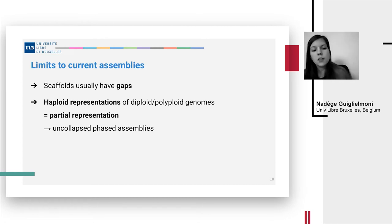Then assemblies are usually haploid assemblies even for diploid and polyploid genomes, so you only get a partial representation of these genomes. And having a haploid assembly for these genomes implies that you need to collapse haplotypes to get only one sequence for pairs of chromosomes. So this can be quite difficult for highly heterozygous genomes to collapse highly divergent regions. Ideally we would prefer to get uncollapsed phased assemblies.